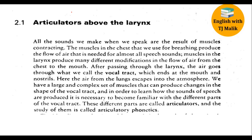There are many articulators and speech organs involved. After passing through the larynx, the air goes through what we call the vocal tract, which ends at the mouth. We have a large and complex set of muscles that can produce changes in the shape of the vocal tract. In order to learn how the sounds of speech are produced, it is necessary to become familiar with the different parts of the vocal tract.